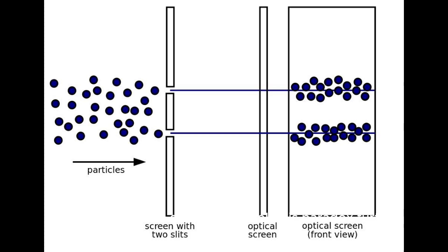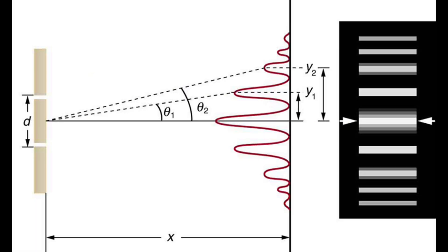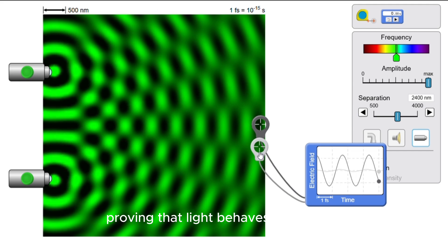The double slit experiment took this paradox further. When light passes through two slits, instead of two bright spots, we observed an interference pattern, proving that light behaves like a wave.